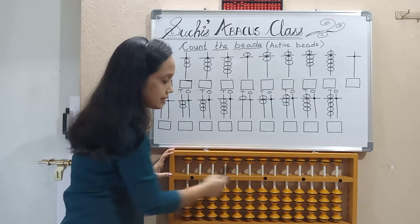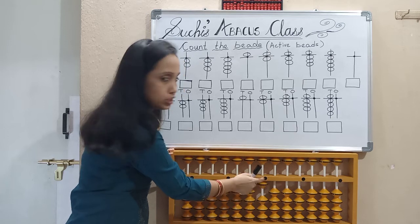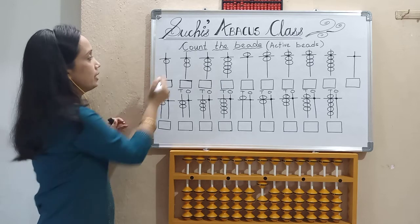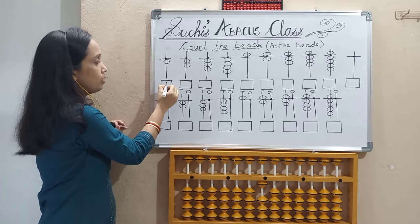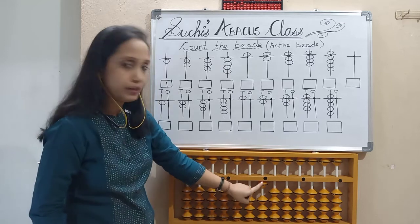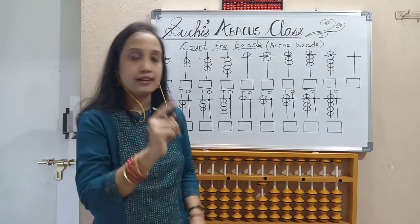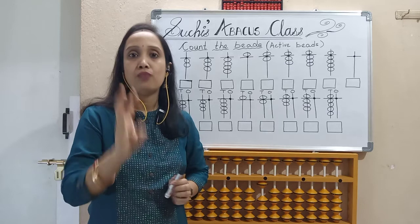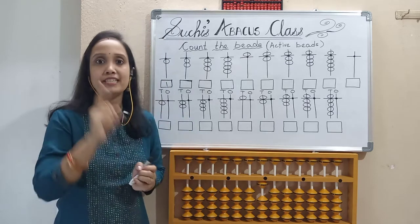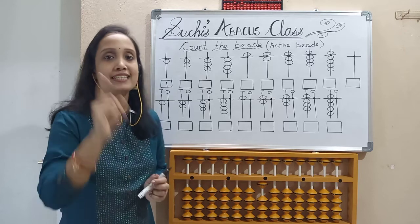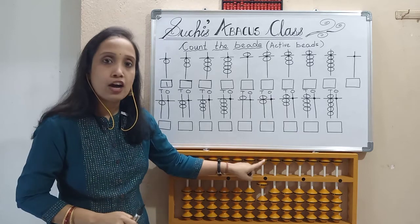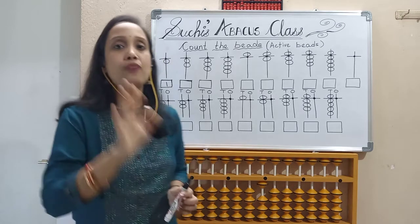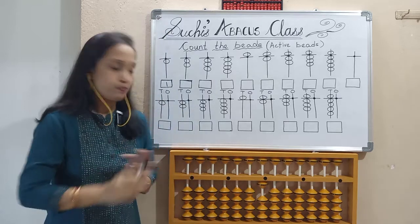In this single rod, if one bead is touching the horizontal bar, we have to count just that one bead, so the value will be 1. Each lower bead value is 1. We have four lower beads and one upper bead. That upper bead value is 5.